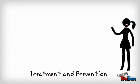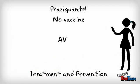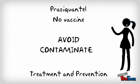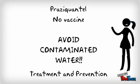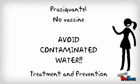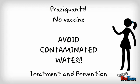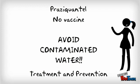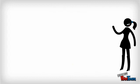For treatment and prevention, praziquantel is effective against all three species and there is no vaccine available. Contaminated water should be avoided, and sanitary disposal of sewage and destruction of snails are also good preventative measures.